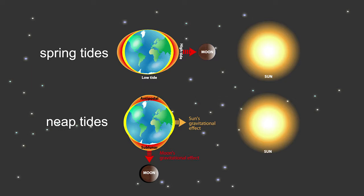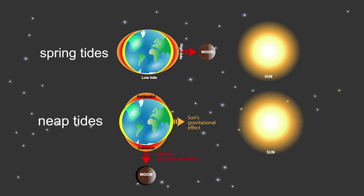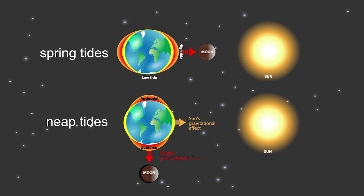Likewise, the tides are the weakest at the waxing and waning quarter moons, when the Sun, Moon, and Earth are the farthest from alignment. These are known as neap tides.